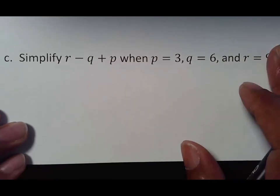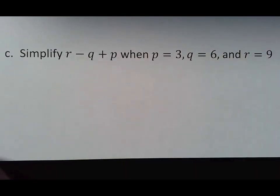Simplify R minus Q plus P. When P is equal to three, Q is equal to six, R is equal to nine. Please pause your video. Try that out. And that way you can see if you're doing anything wrong and then you can deal with any issues that might still be there.